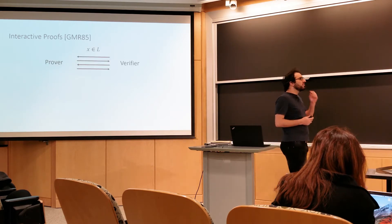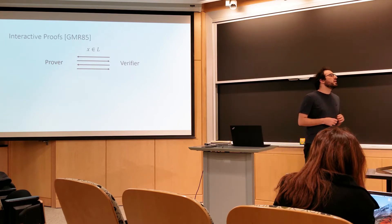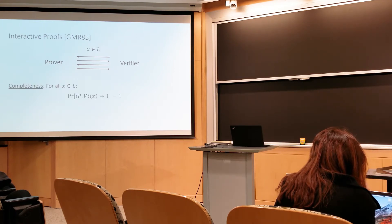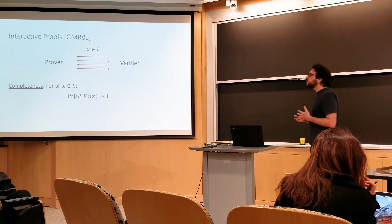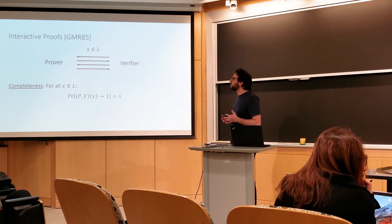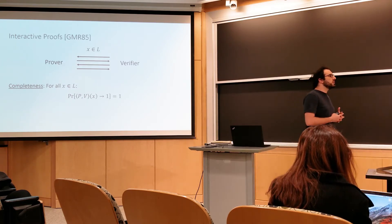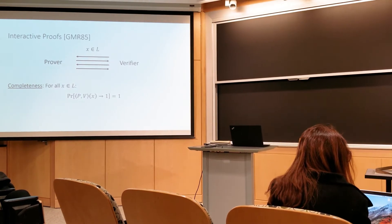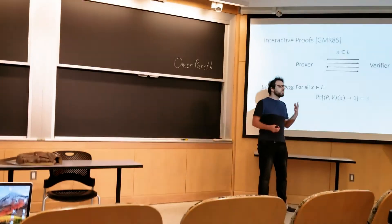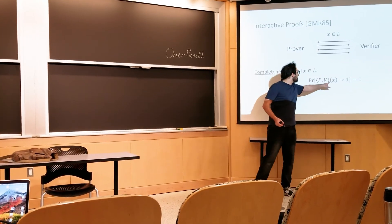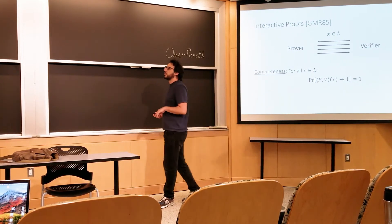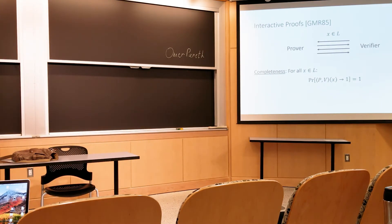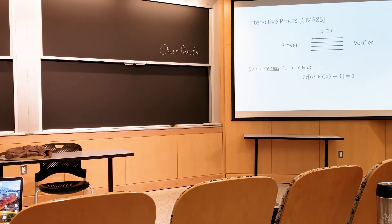In an interactive proof, we have a prover and a verifier having a conversation. The prover tries to convince the verifier of some statement x ∈ L. This proof system should have basic properties. First, completeness: if the statement is correct and x ∈ L, then the prover will convince the verifier to accept with probability one. This notation represents the interaction of the prover and verifier, with x as common input, and the output is the verifier's decision after interaction.